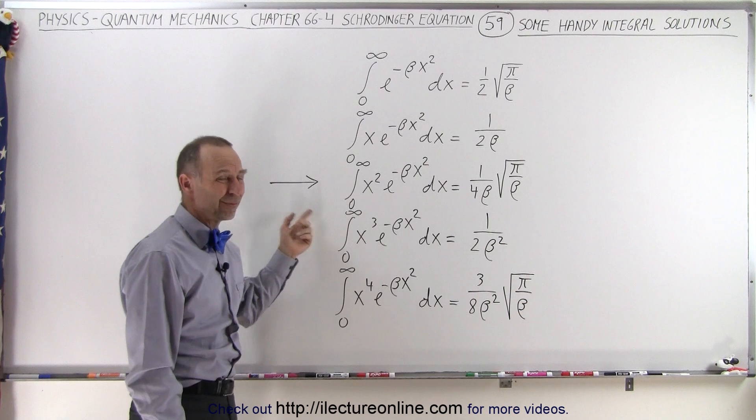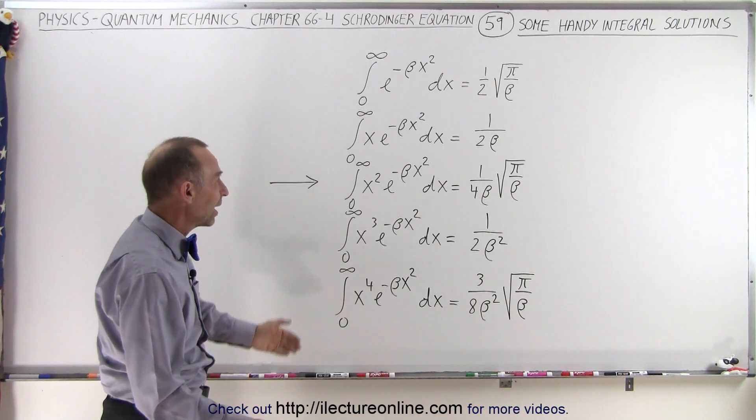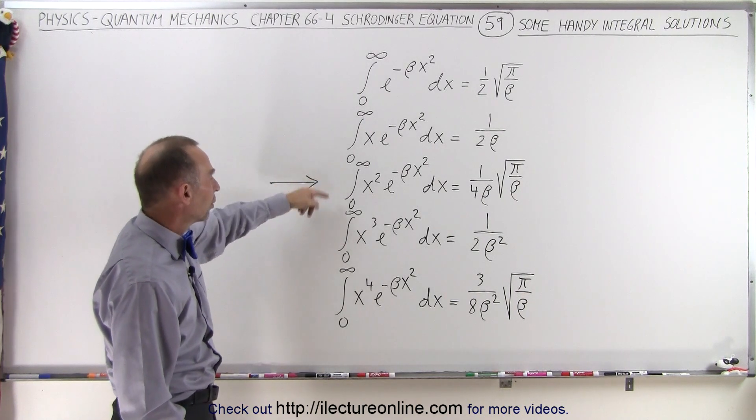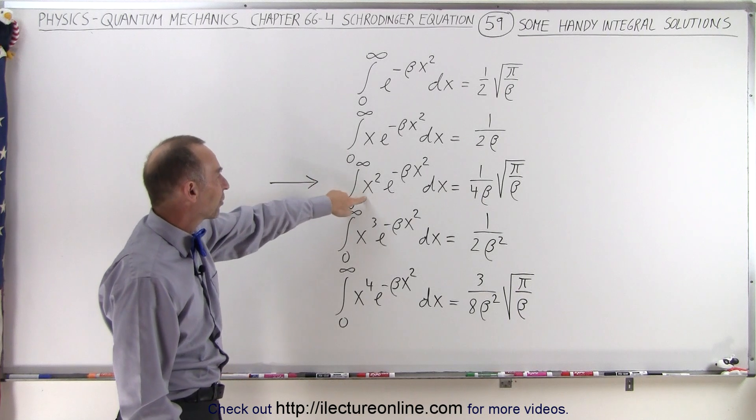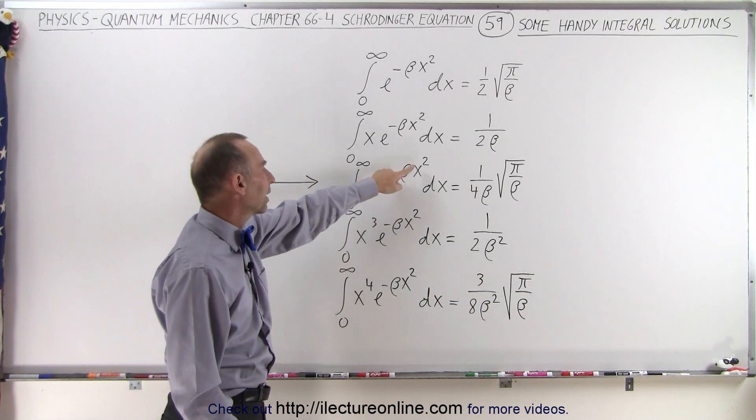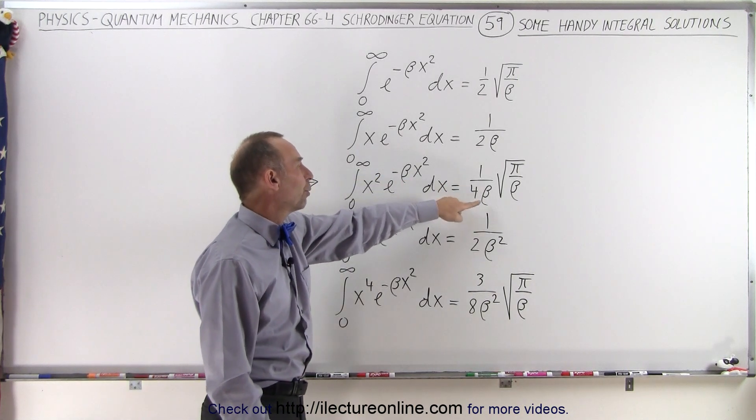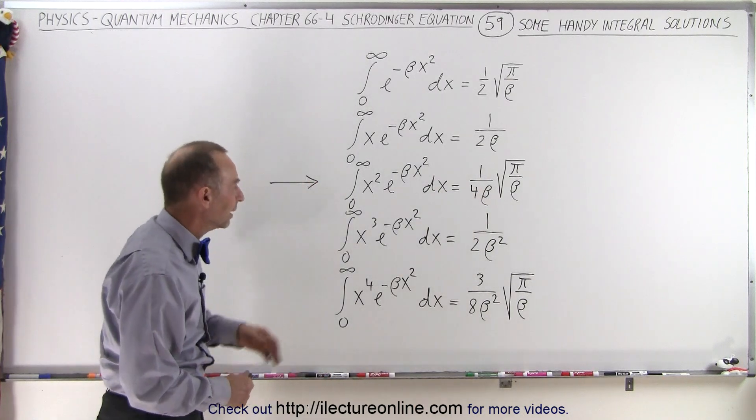But this one, you'd spend a lot of time trying to figure this one out, so here's simply the solution. The integral from 0 to infinity of x squared times e to the minus beta x squared dx is 1 over 4 beta times the square root of pi over beta.